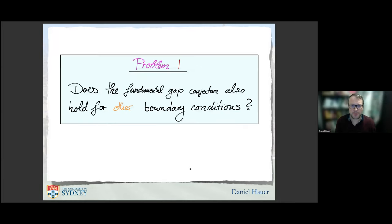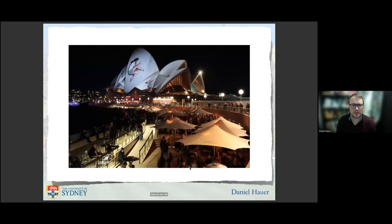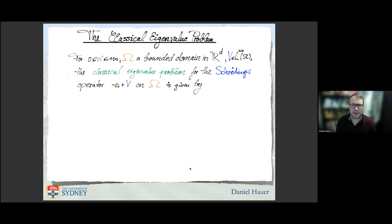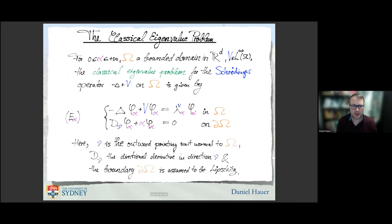The first problem is: does the fundamental gap conjecture also hold for other boundary conditions? That's a natural question. What kind of boundary conditions were we looking at? Here we have the eigenvalue problem for the Schrödinger operator, and now you see mixed boundary condition, which we also called Robin boundary condition. Alpha is the Robin coefficient, and nu is the outward pointing unit normal, so d_nu phi_alpha is the normal derivative.